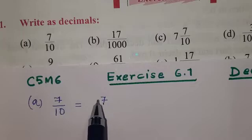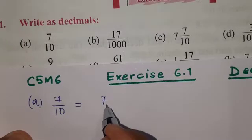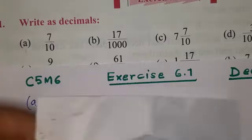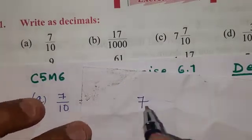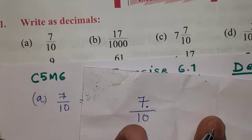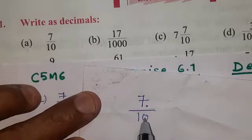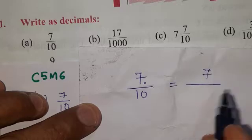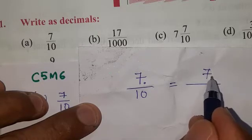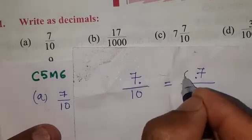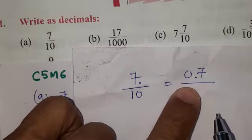Now, we have to write 7/10 as a decimal. We count the digits: one, two, three. The denominator is 10, so we have one zero. We place the digits accordingly: 0.7. That is the decimal number.